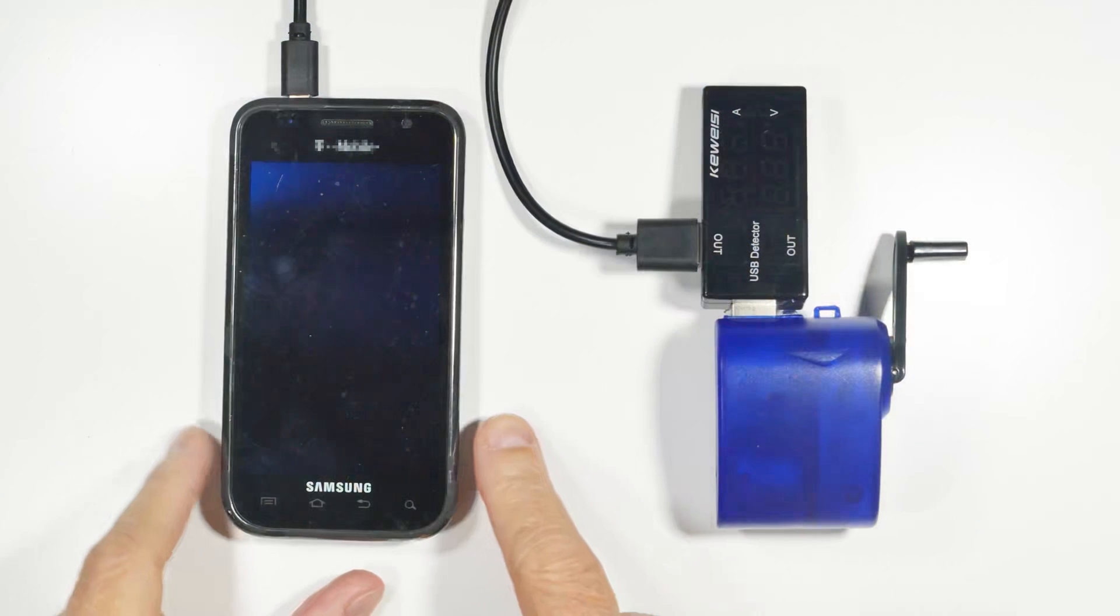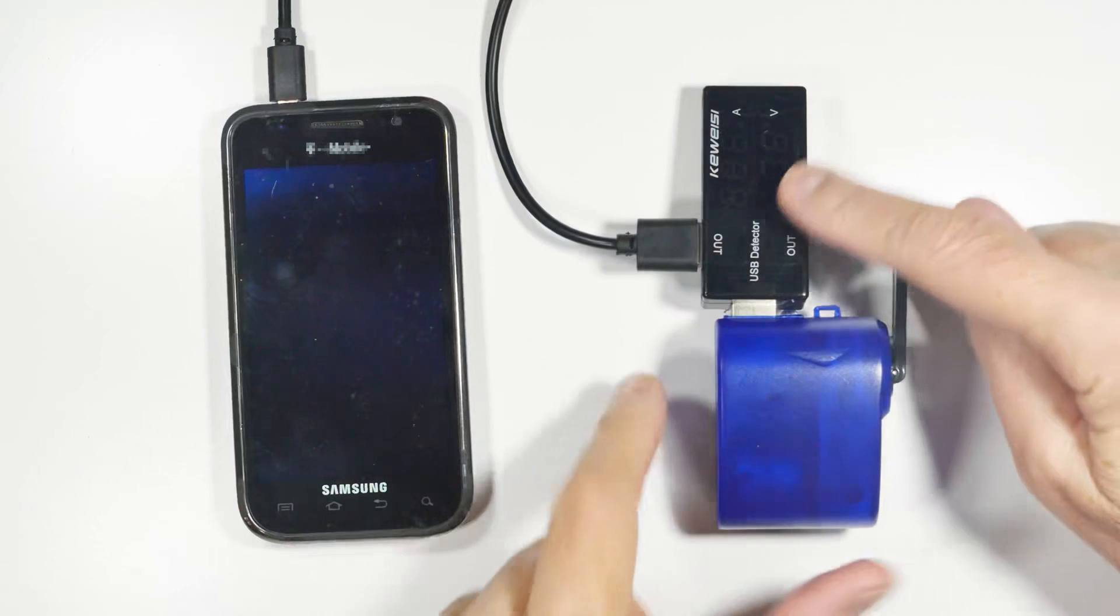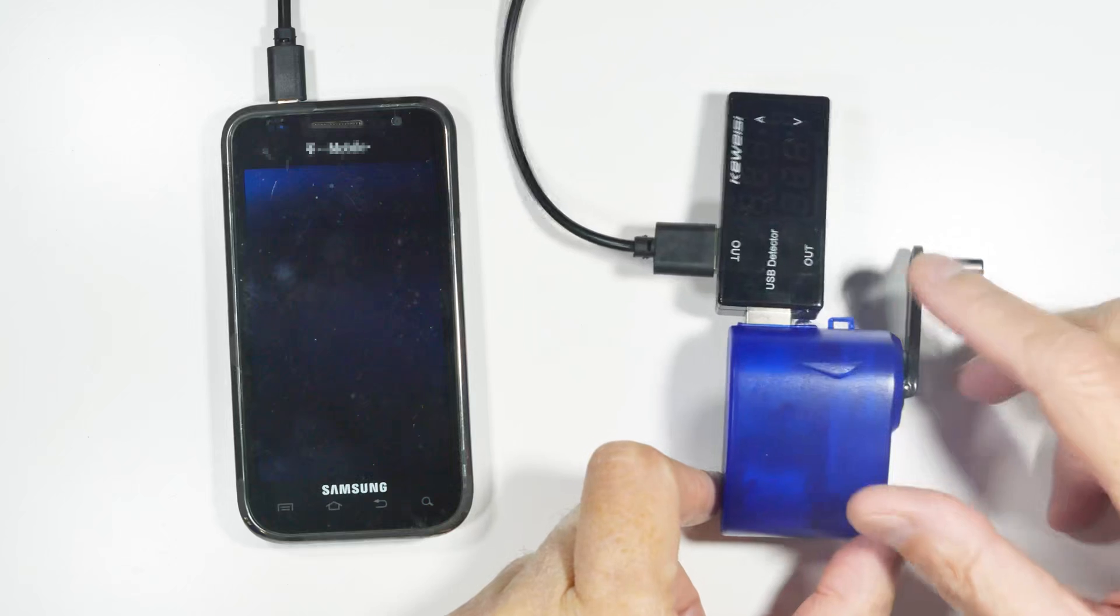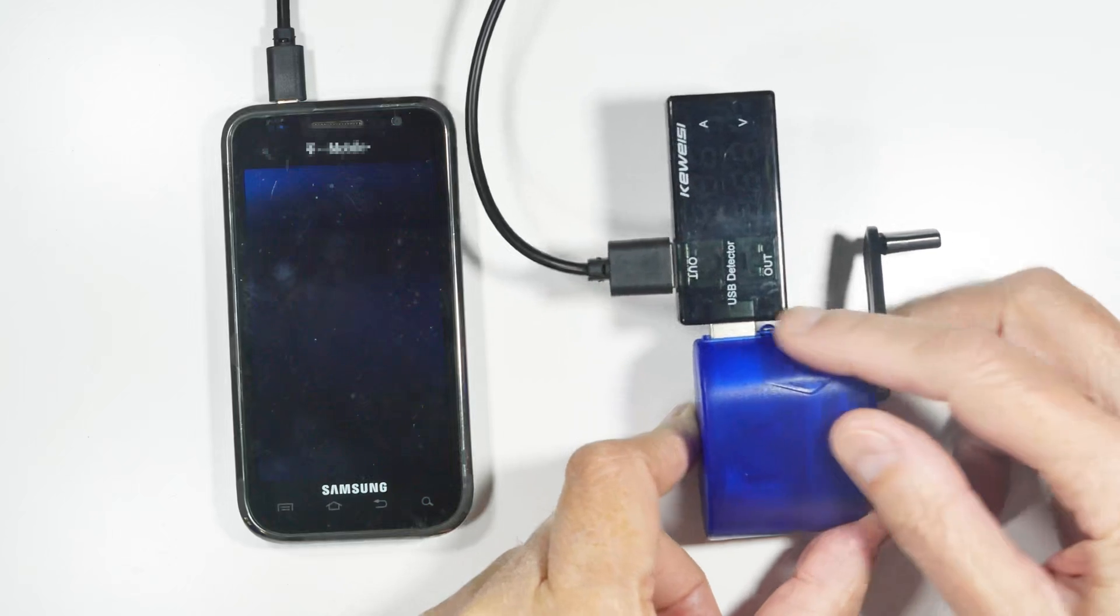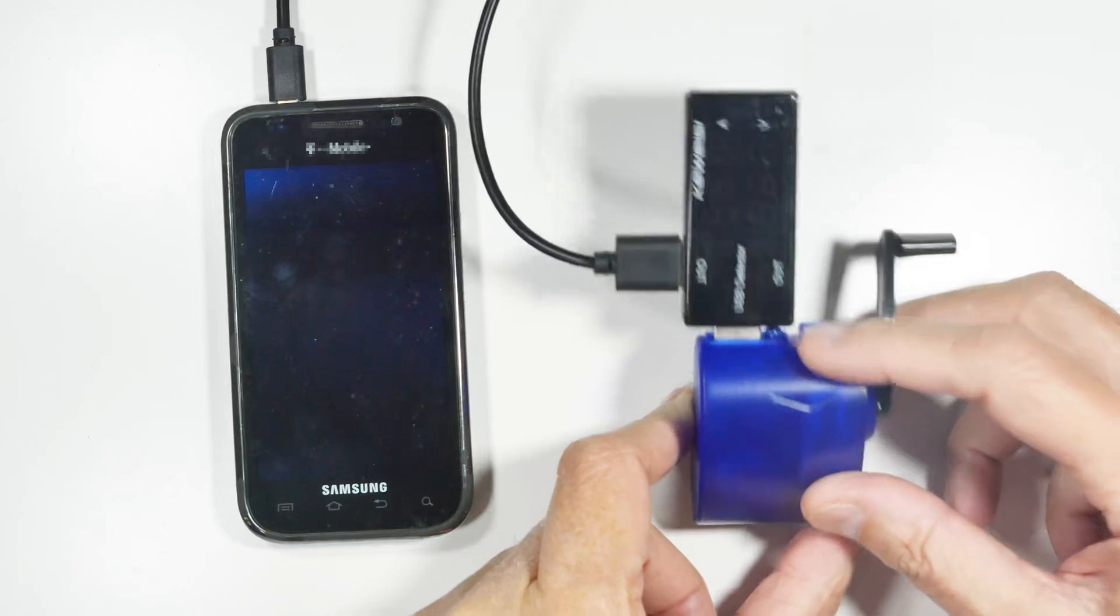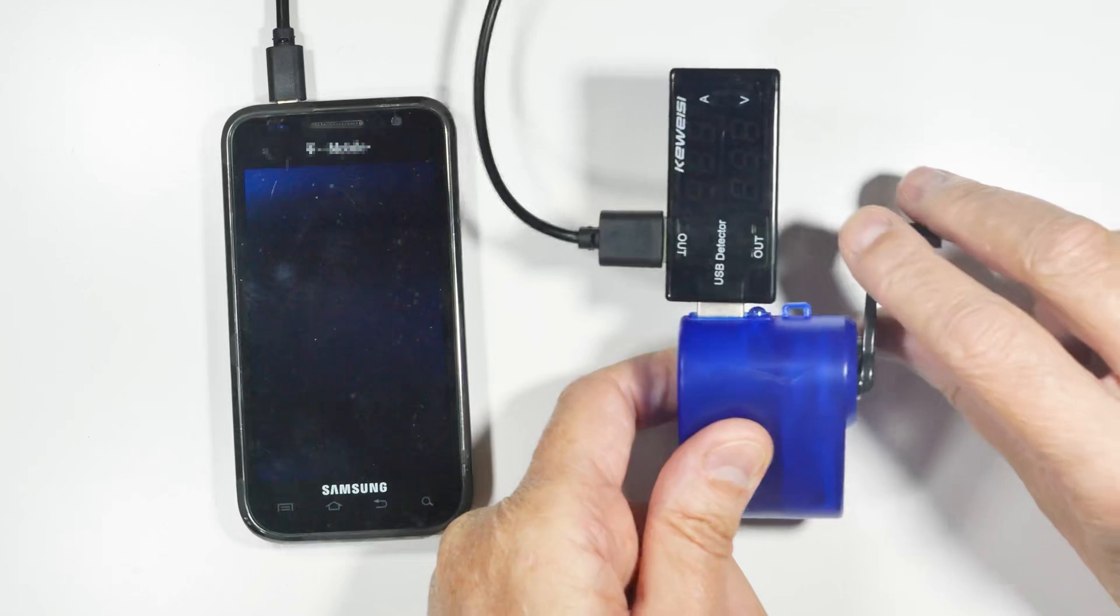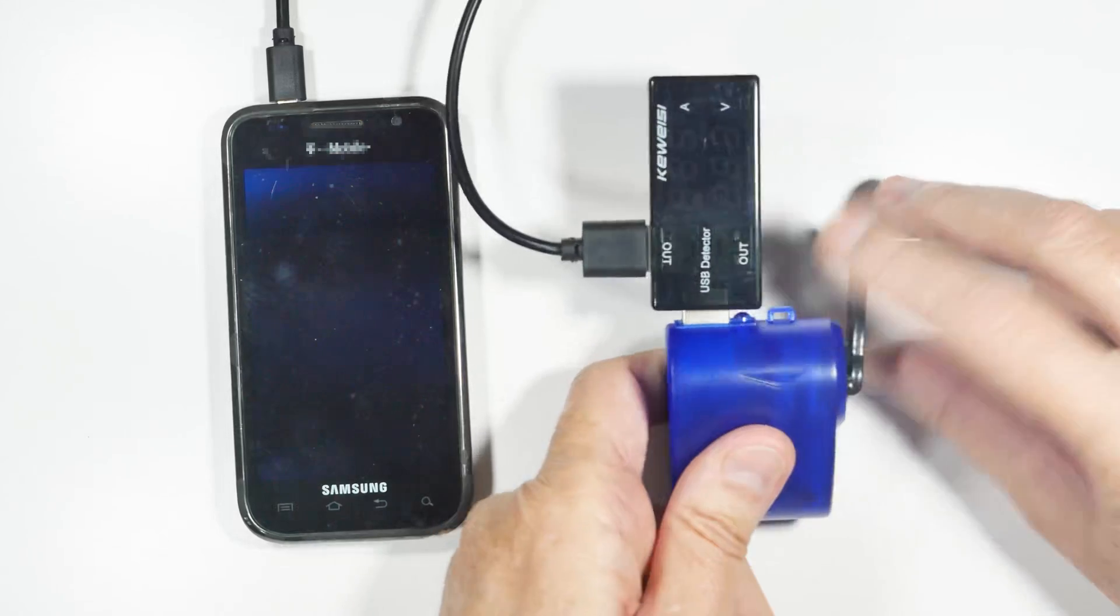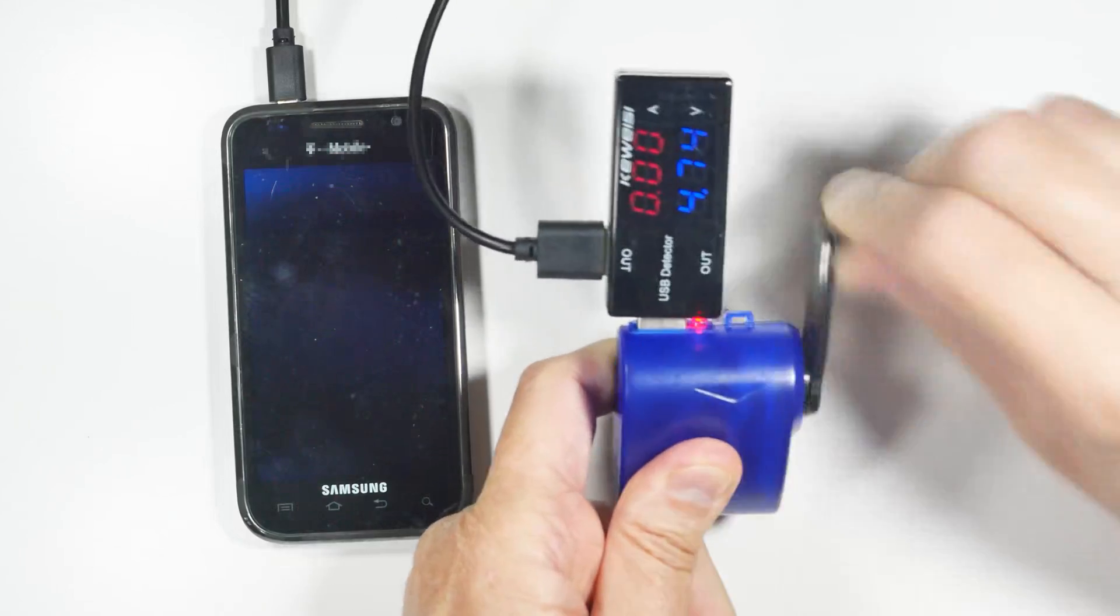Here we have a similar setup. The phone is here obviously. Here is our meter and instead of hooking it to the wall wart and the mains power we have it hooked to our generator USB slot. And now we shall crank this and see if we can reach our five and a half volts and a half an amp.